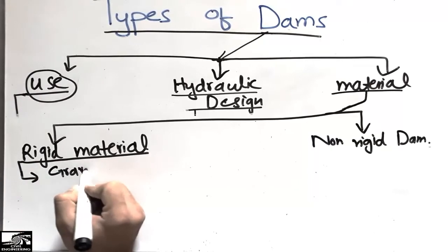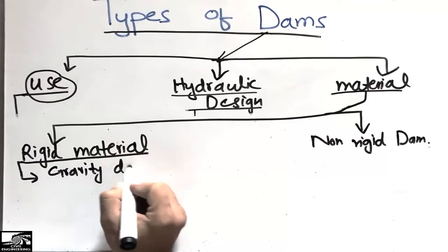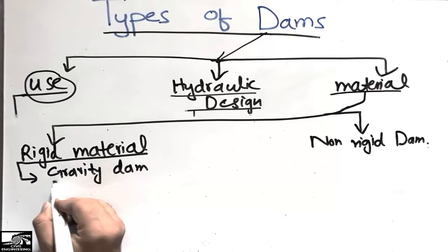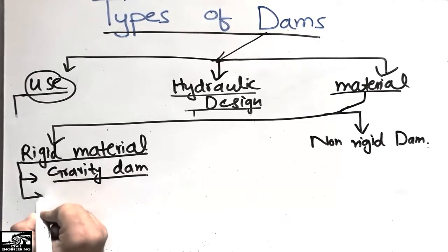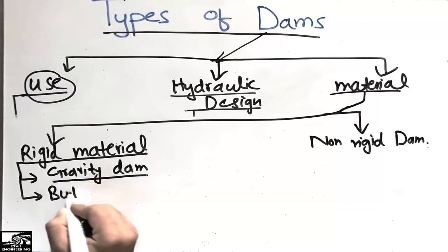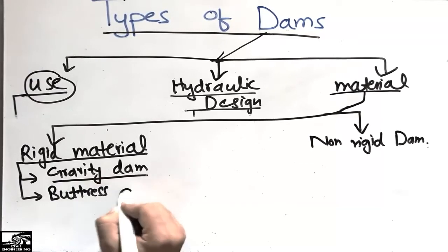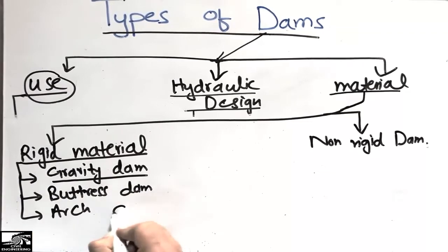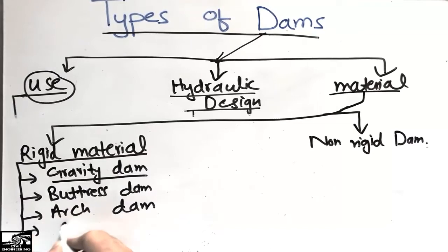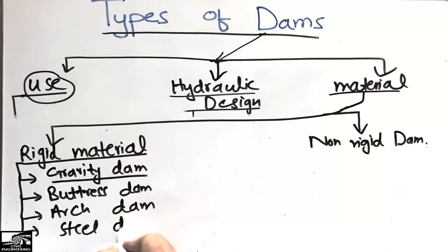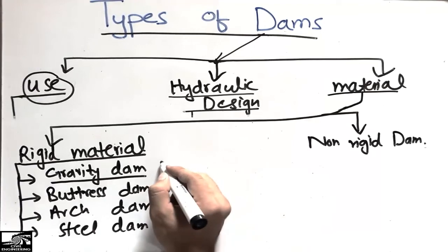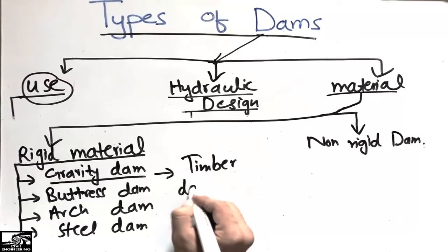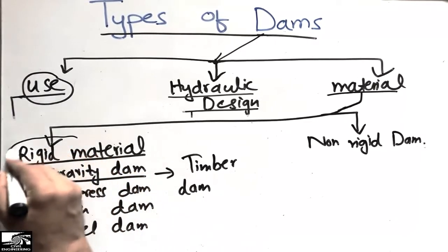Under rigid dams, there are further subtypes. Gravity dams are those dams which support the load of water by their own weight. The second one is the buttress dam. Arch dams are also in this category, as are steel dams and timber dams — wood dams are also involved in the rigid material category.